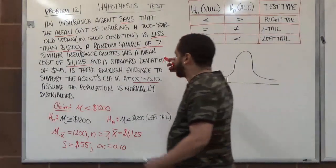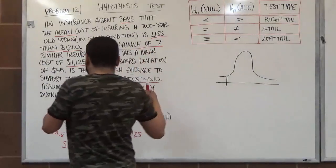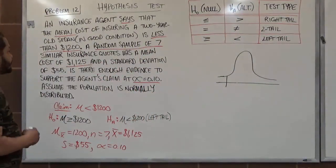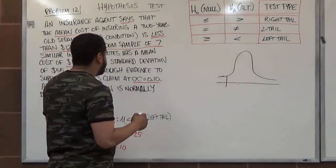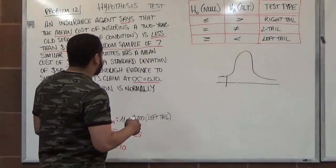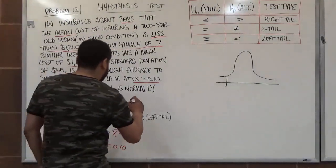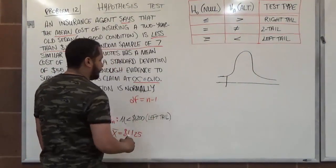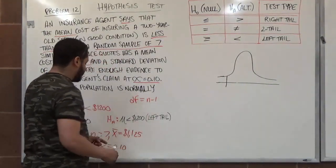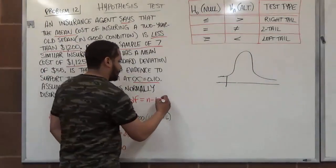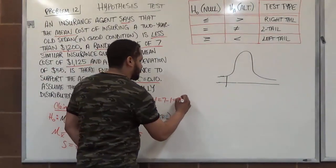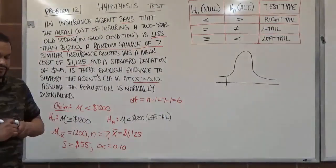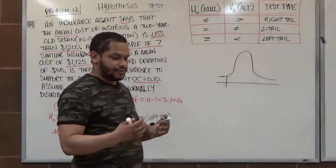To find the t-score critical value, we need the degrees of freedom, calculated as df = n − 1. With n = 7, we get df = 7 − 1 = 6. The degrees of freedom are essential for finding the critical value.